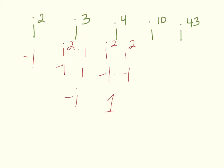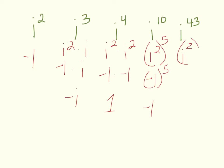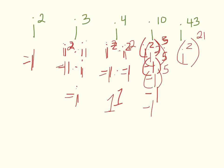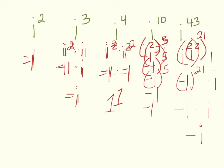We could do i to the tenth — that would be i squared to the fifth power, which is negative 1 to the fifth power. Any time we raise negative 1 to an odd power, we get negative 1. So if I did something crazy like i to the forty-third, I could turn that into i squared to the twenty-first power times i. That's negative 1 to the twenty-first times i. Twenty-one is odd, so that's negative 1 times i, which is negative i. You can do this for any power.